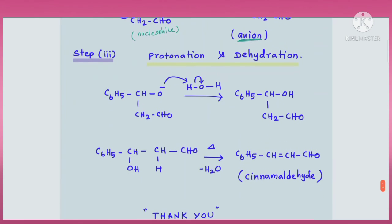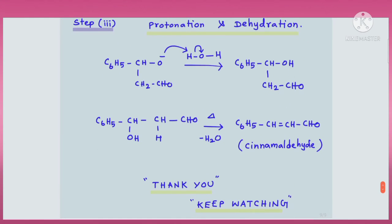The next step is protonation followed by dehydration. The anion formed in the second step is protonated by the water molecule generated in the first step. The O⁻ takes an H⁺ to become OH, with OH⁻ as a byproduct. This gives a beta-hydroxy aldehyde — the hydroxyl group is on the beta carbon relative to the aldehyde. So alpha carbon, beta carbon — there is a hydroxy group on the beta carbon, giving a beta-hydroxy aldehyde.